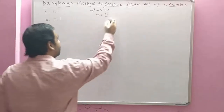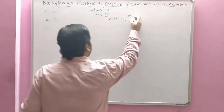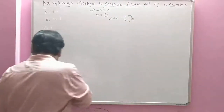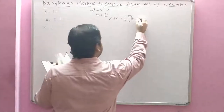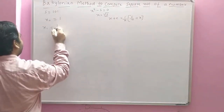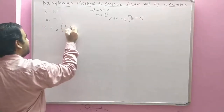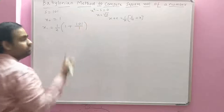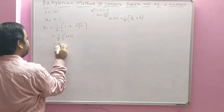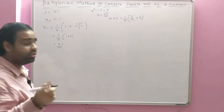We compute x₁ using the formula: x₁ = (1/2)(x₀ + s/x₀). Substituting x₀ = 1: x₁ = (1/2)(1 + 101/1) = (1/2)(102) = 51. We then check the absolute difference |x₀ − x₁| = |1 − 51| = 50.